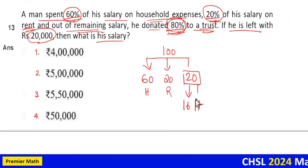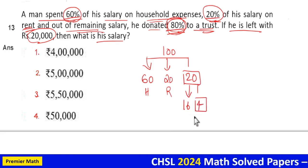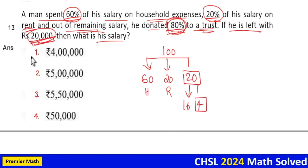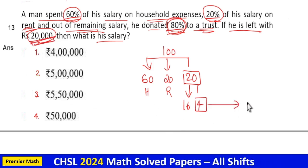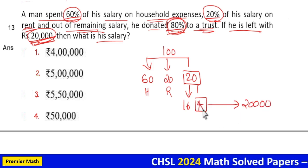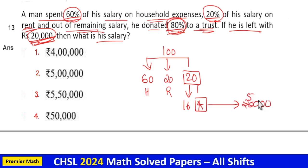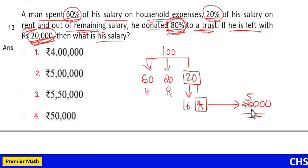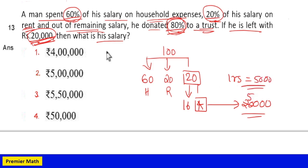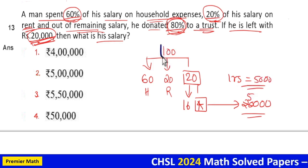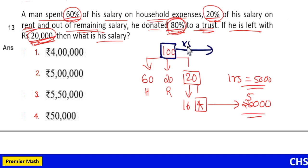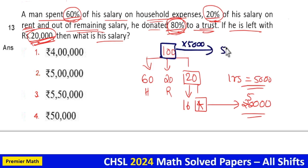The remaining is 4 rupees. In the question, the remaining is 20,000. So this 4 rupees equals 20,000, meaning 1 rupee equals 5,000. We need to find what 100 rupees is: 100 into 5,000 equals 5 lakh.